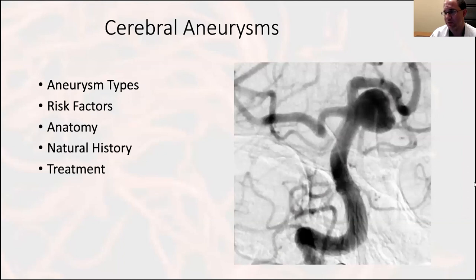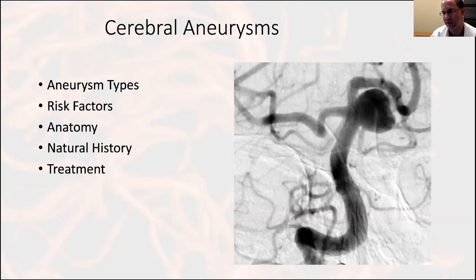To stratify today's discussion, we'll talk about the different types of aneurysms, really focusing on saccular aneurysms. We'll briefly cover risk factors for formation, spend a decent amount of time on anatomy, and then cover the key factors: natural history and treatment options.